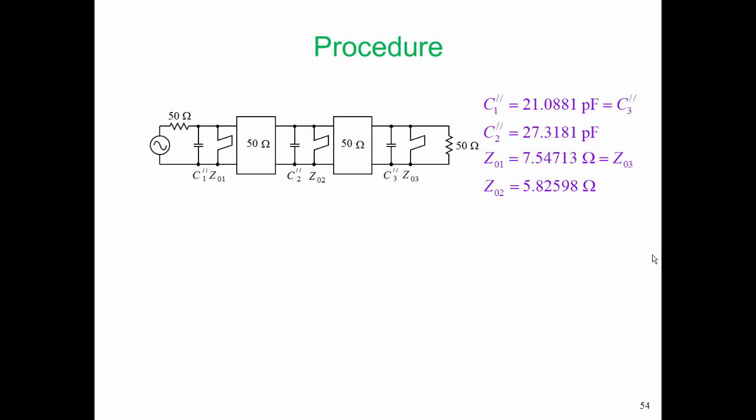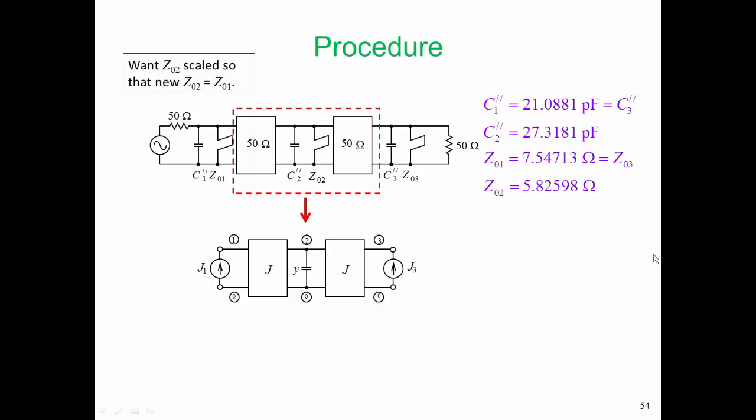So here's the procedure we're going to follow. We want Z02 scaled so that Z02 is equal to Z01. We are going to do this by looking at that inverter, resonator, inverter combination. We're going to replace the resonator by admittance for the moment,